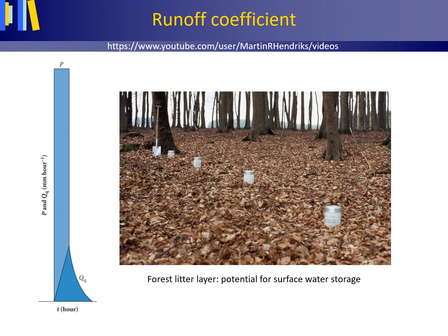Usually in plots of storm hydrographs, discharge and precipitation are presented using different units — for instance, cubic meters per second for discharge versus millimeter per hour for precipitation — and thus along differently scaled axes. The first impression of such figures may be that a large percentage of precipitation is discharged as quick flow during storms, which may be misleading.